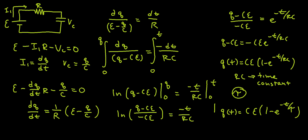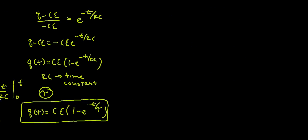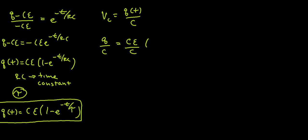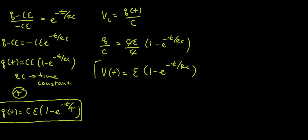And that's my charging equation to solve for charge with respect to time. The AP frequently asks you to use an equation for voltage. Voltage is fairly simple — we know that the voltage on a capacitor is V_C equals Q of t over C. So I can just divide my function by C, and I get V of t equals epsilon times (1 minus e to the negative t over RC).